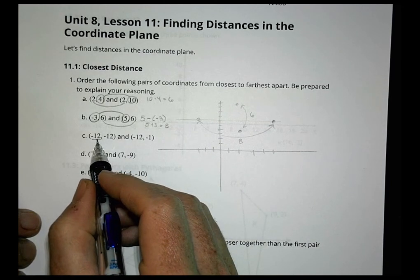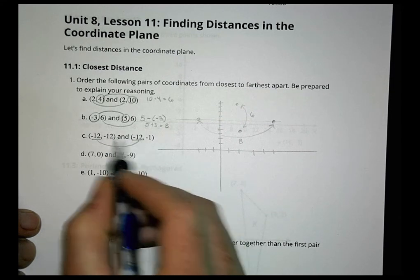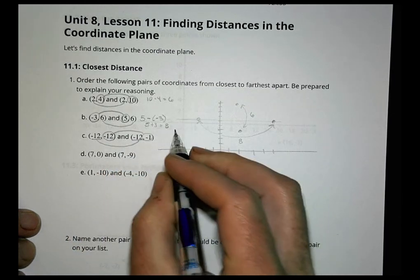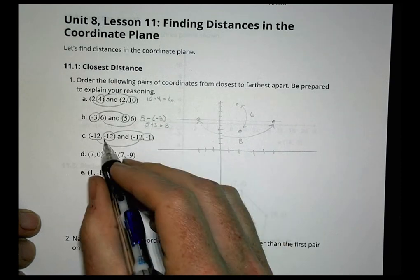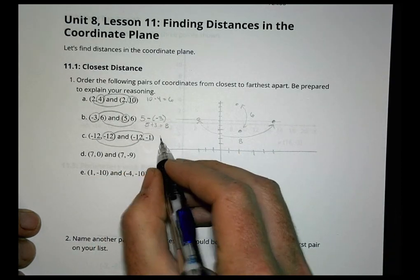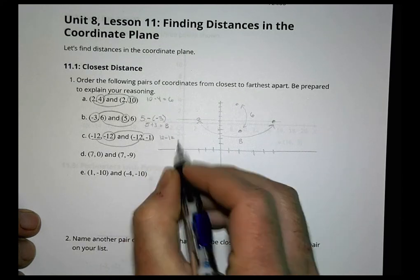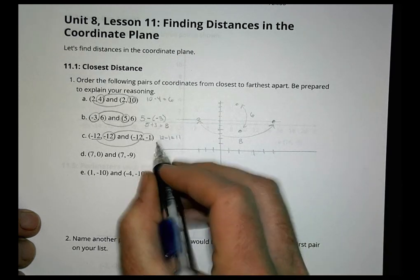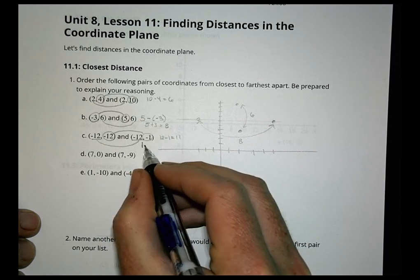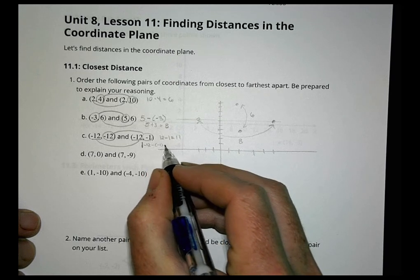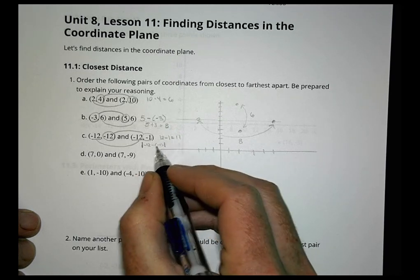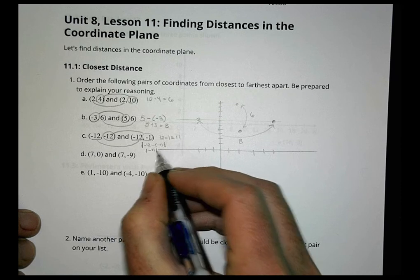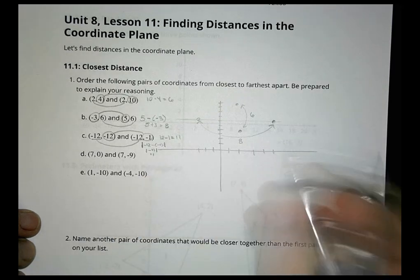With C, the x-value negative 12 matches, so the difference is between the y-values: negative 12 and negative 1. Since they're both negative, we can think of it as 12 minus 1 = 11. More formally, the absolute value of negative 12 minus negative 1 equals the absolute value of negative 11, which is 11.